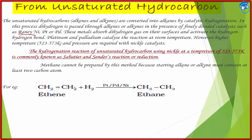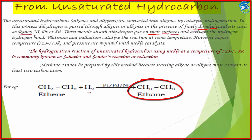We take an unsaturated hydrocarbon plus hydrogen gas. What these catalysts do is provide a surface for the reaction — their surface becomes the reaction site where the reaction takes place. Hydrogen atoms get attached to each of the carbon atoms and finally we get an alkane.